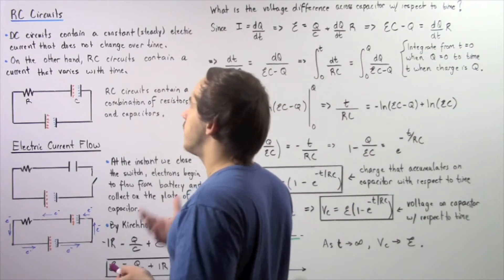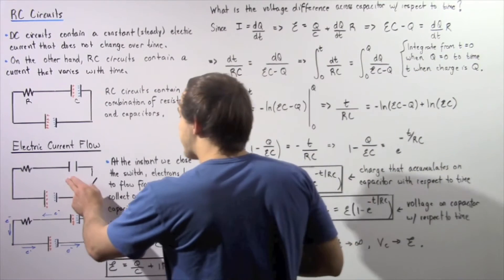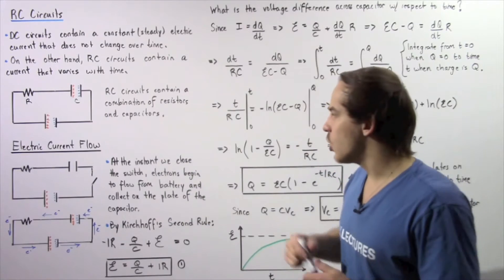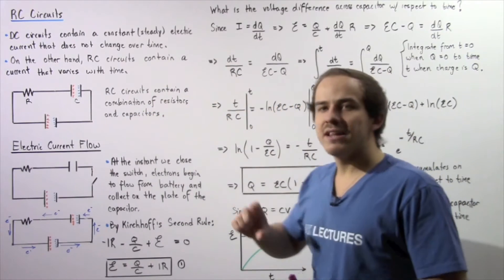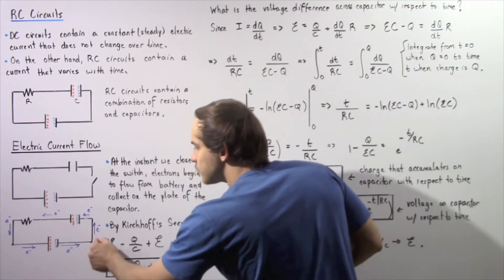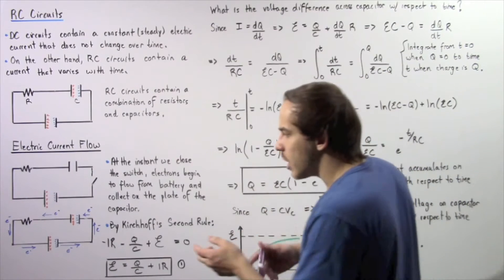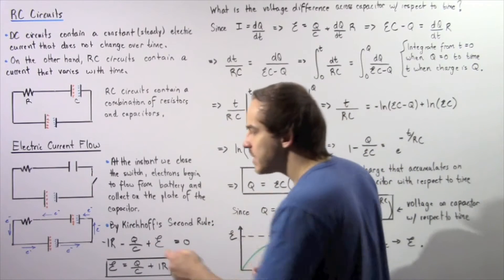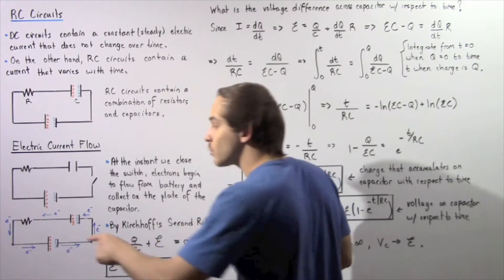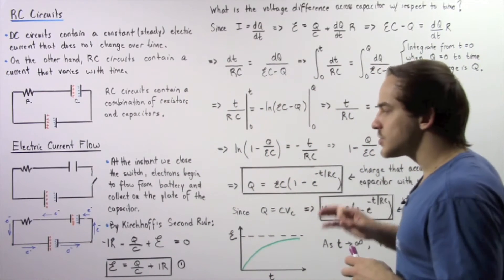Let's begin our examination of RC circuits by discussing the electric current found inside our RC circuit. Suppose we have an open circuit — because the switch is open, no electric current will flow. At the instant we close the switch, electrons will begin to flow from the negative end of our battery. Those electrons collect on one plate of our capacitor, and that collection of electrons will repel the electrons on the other plate, forcing them to flow through our resistor with resistance R and into the battery.